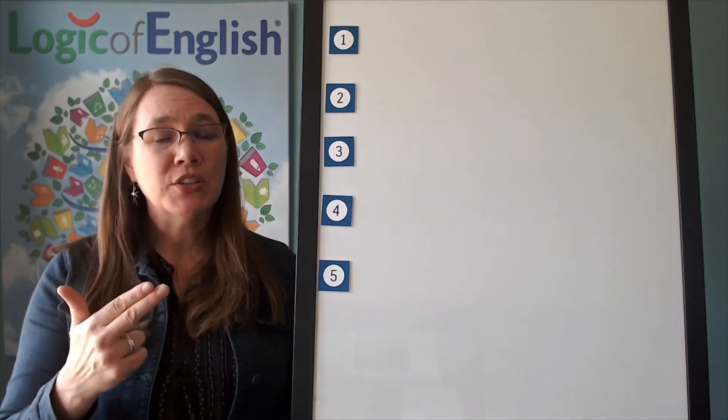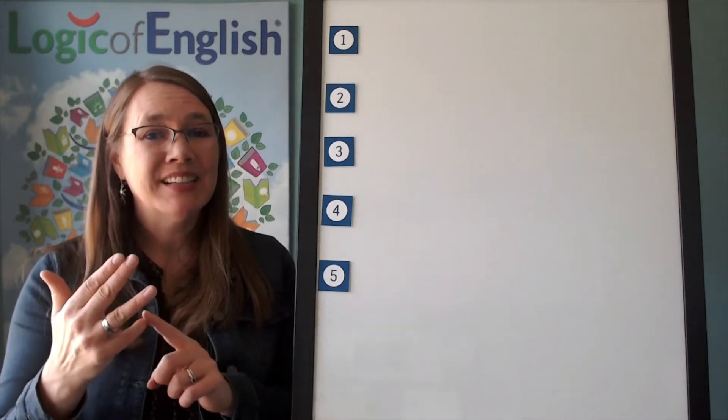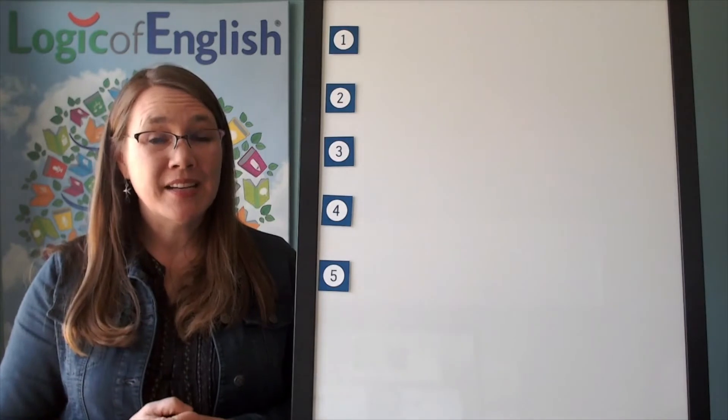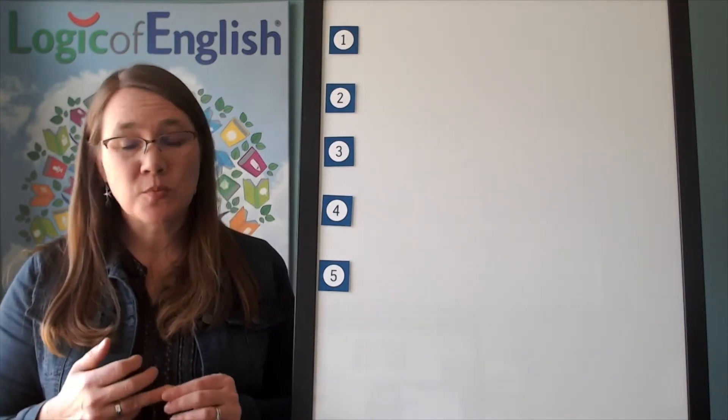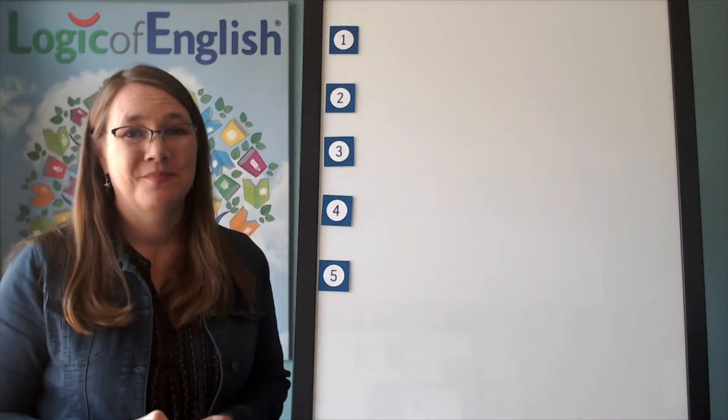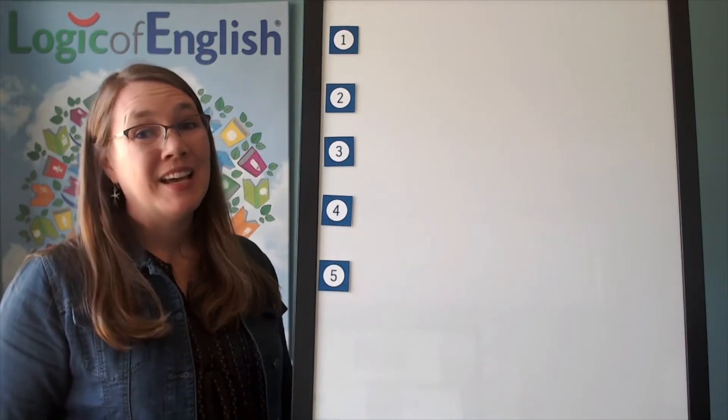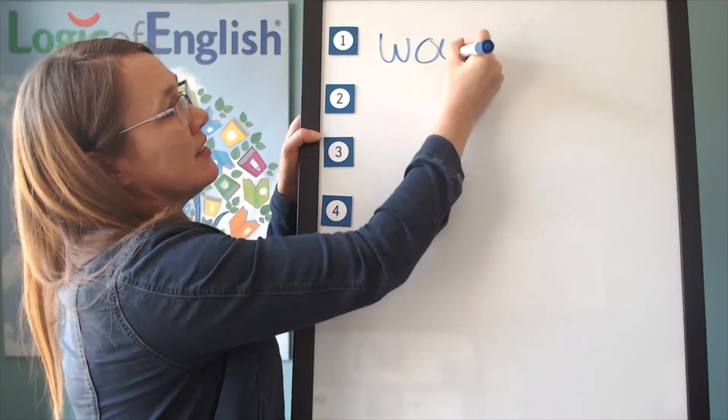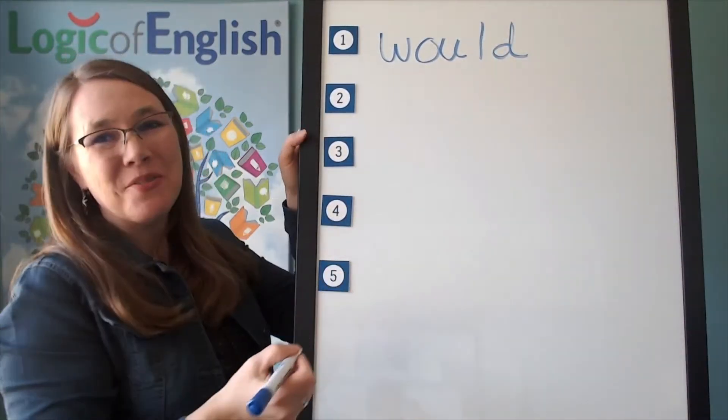We'll just sound out would. Wuh, uh. This is an ow, o, oo, uh, uh. Silent L. Duh. Got it? Go ahead and write would. And make sure you put in that silent L. Excellent. Now help me write it. Wuh, uh. Silent L. Duh. How will we mark it?